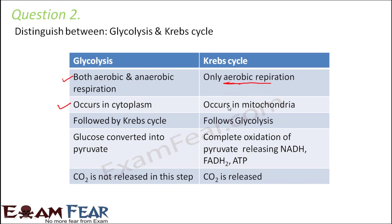Glycolysis occurs in the cytoplasm, whereas the Krebs cycle occurs in the mitochondria. Glycolysis is the first step of respiration and is followed by the Krebs cycle. In glycolysis, glucose gets converted into pyruvate or pyruvic acid. In the Krebs cycle, pyruvate gets completely oxidized, forming NADH molecules, FADH2, and ATP molecules. Also, CO2 is not released in glycolysis, but CO2 is released in the Krebs cycle.